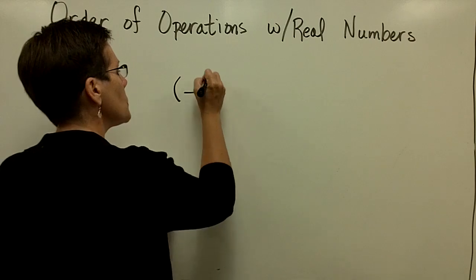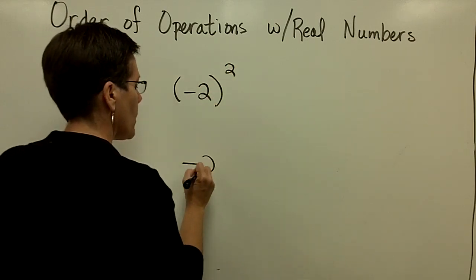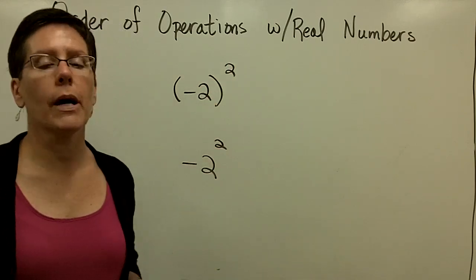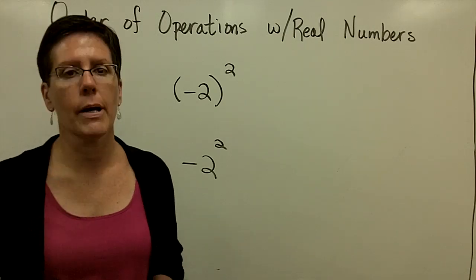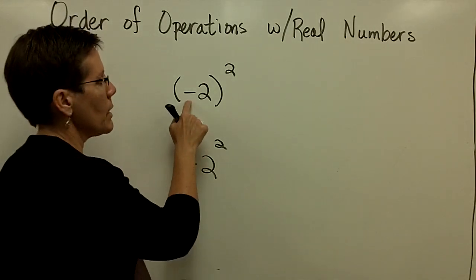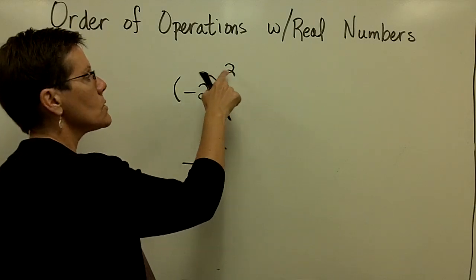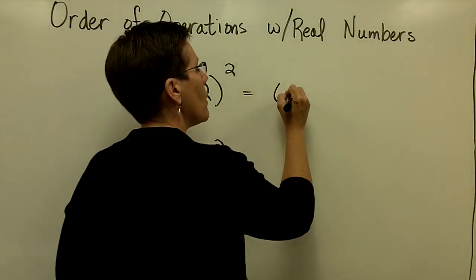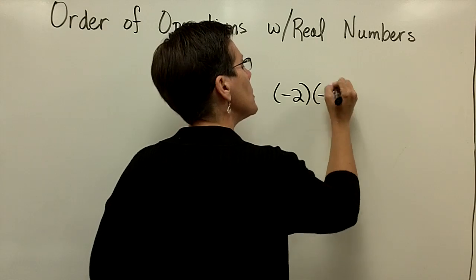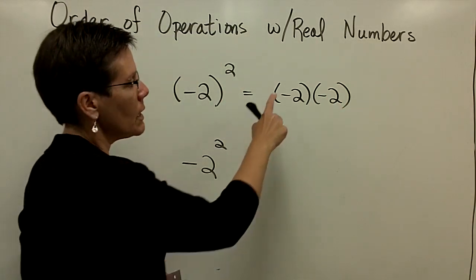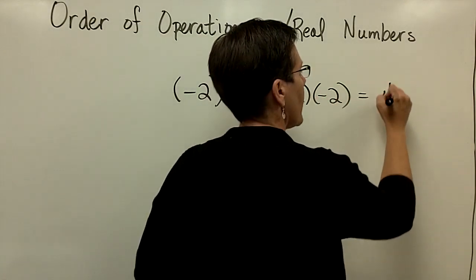Many people confuse this problem with this problem, and it's all about the parentheses. All about the parentheses. This problem right here says take what's in the parentheses, which is negative 2, and square it. In other words, multiply it times itself two times. And negative times negative is positive.